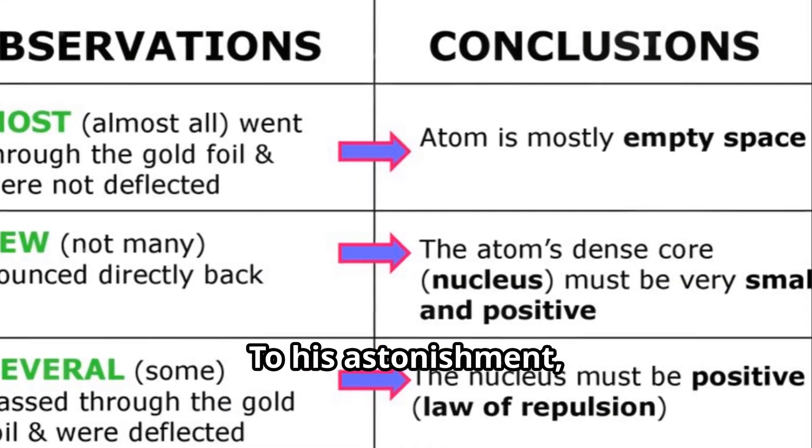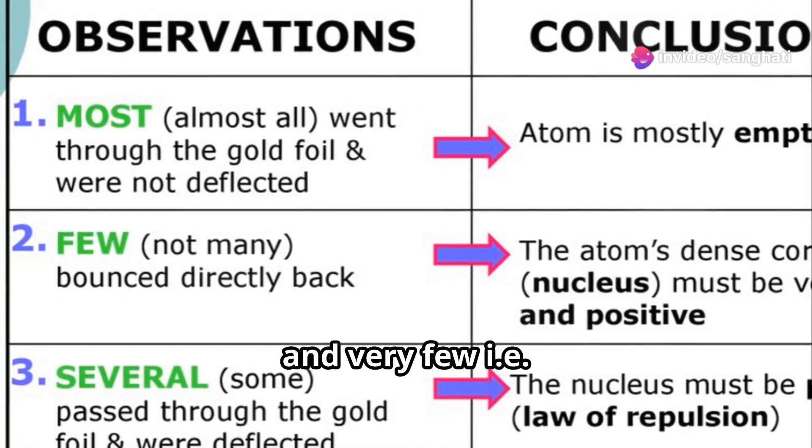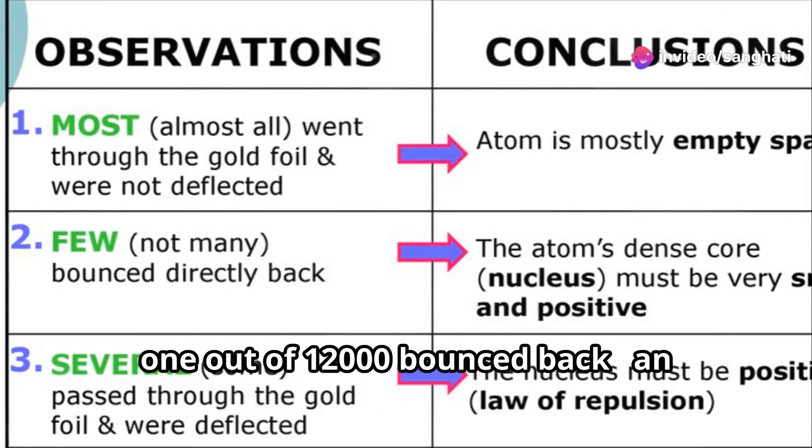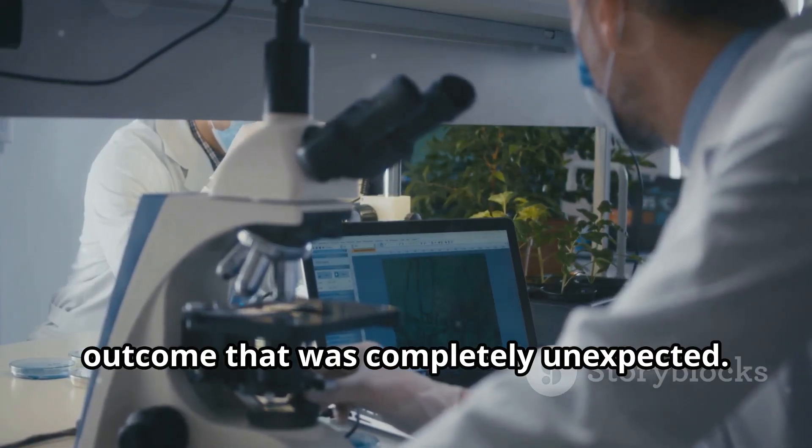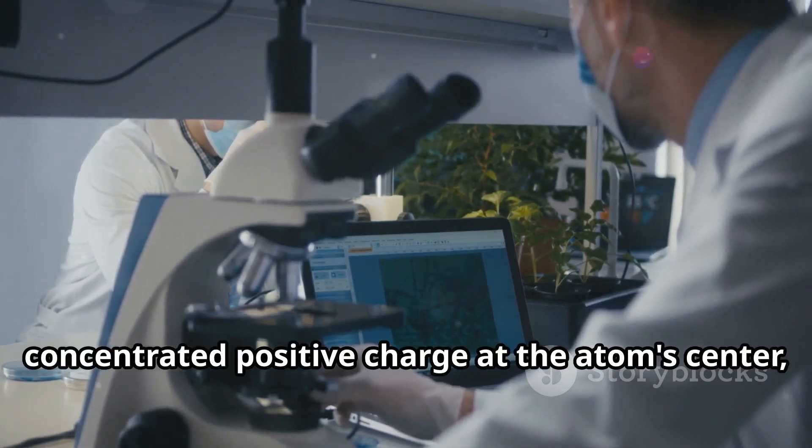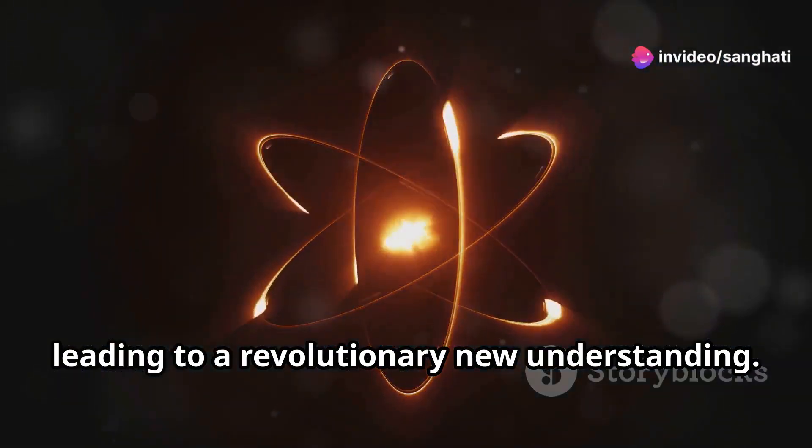Rutherford expected most of the alpha particles to pass straight through the foil, based on the then-accepted plum pudding model of the atom. To his astonishment, some alpha particles were deflected at large angles, and very few, 1 out of 12,000, bounced back. An outcome that was completely unexpected. This unexpected result suggested a concentrated positive charge at the atom's centre, leading to a revolutionary new understanding.